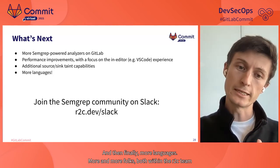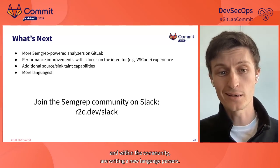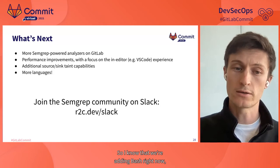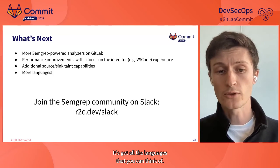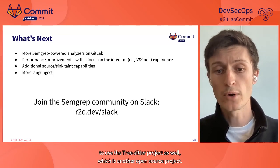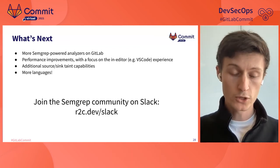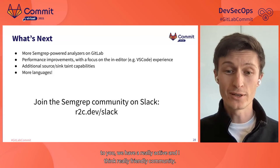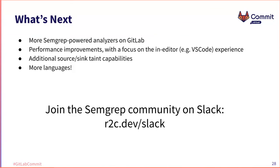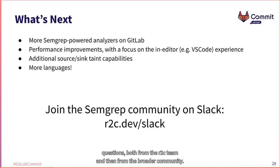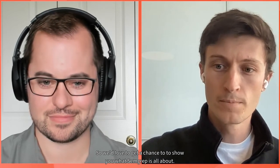And finally, more languages. Both within the R2C team and within the community, people are writing new language parsers. We're adding Bash right now, HTML, Rust, Kotlin — basically all the languages you can think of. We're also fortunate to be able to use the tree-sitter project, which is another open source project. If any of this seems interesting to you, we have a really active and friendly community you can access through r2c.dev/slack. Folks from the R2C team and the broader community are there to answer your questions. I would love to get a chance to show you what Semgrep is all about.